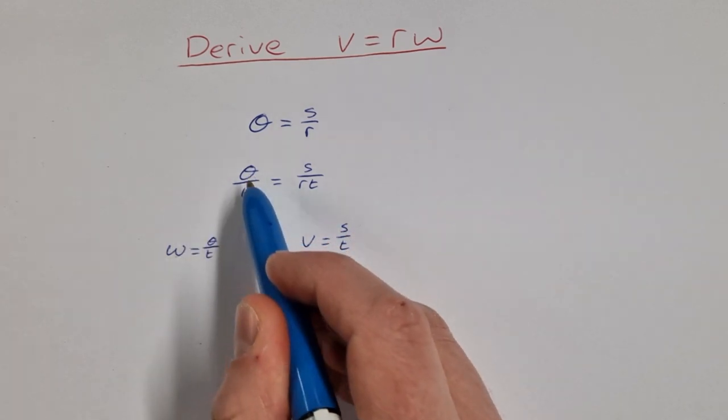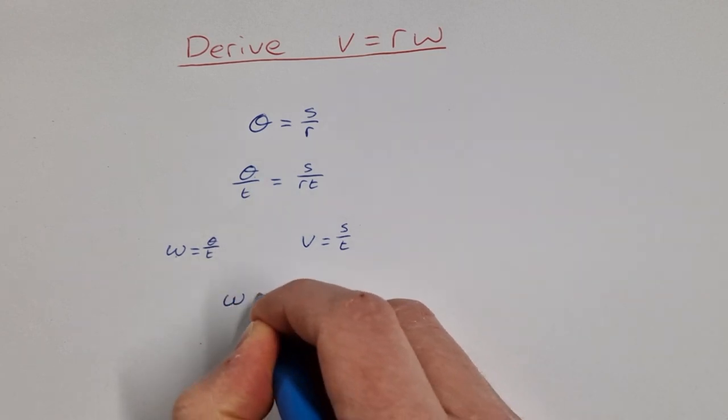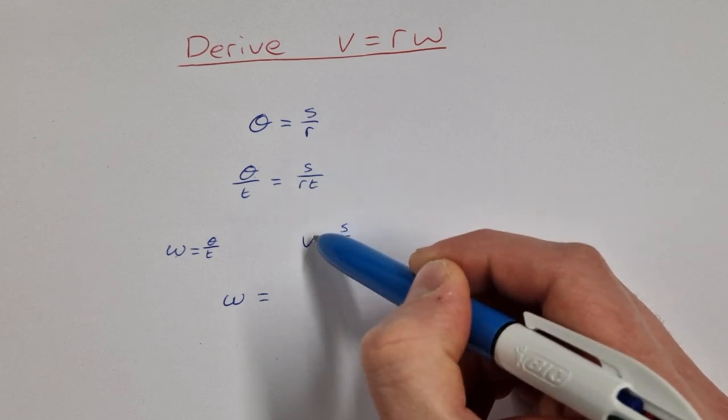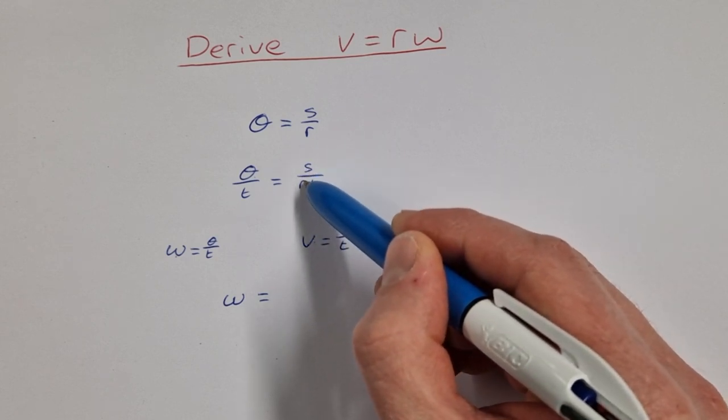omega here for theta over t so that gives me omega on that side and then s over t will now become v so that's v over r.